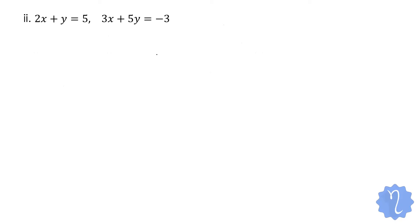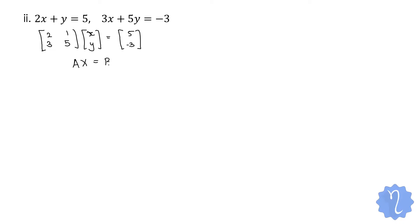Now let us do the next question. As always, the first step is to convert into matrix form. We get [2, 1 / 3, 5] into [x, y] = [5, −3]. Write the matrix form, then pre-multiply by A⁻¹, giving X = A⁻¹ · B.